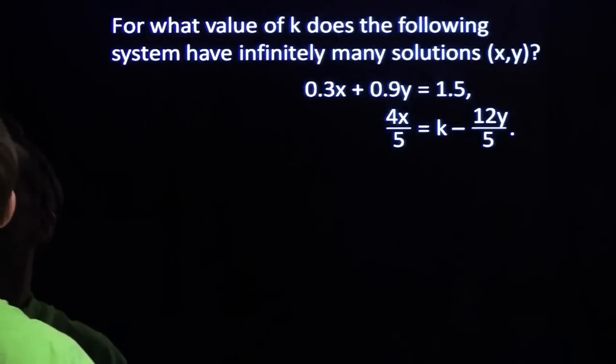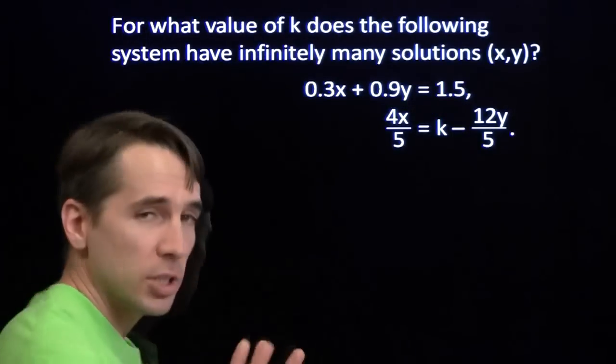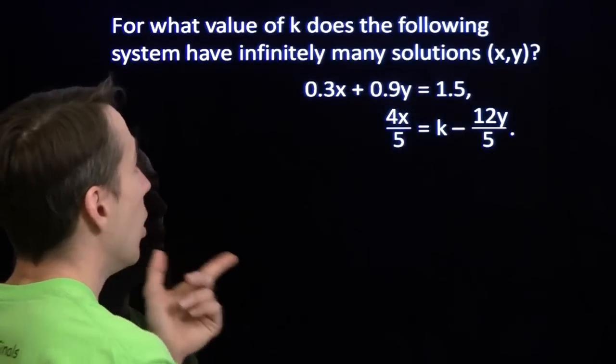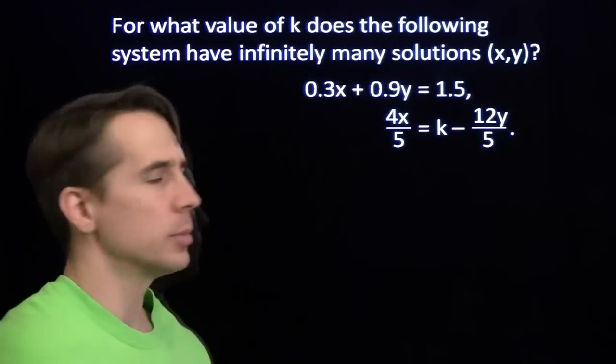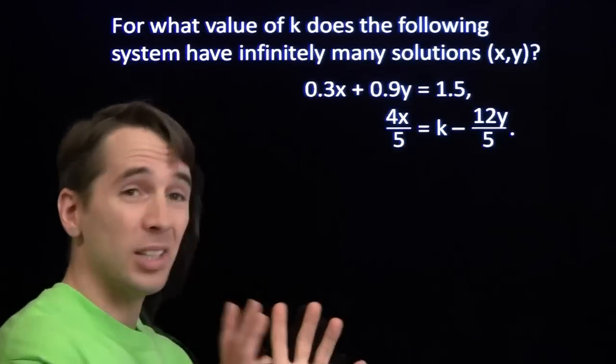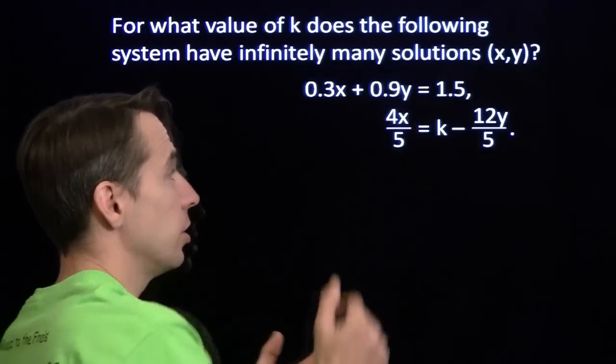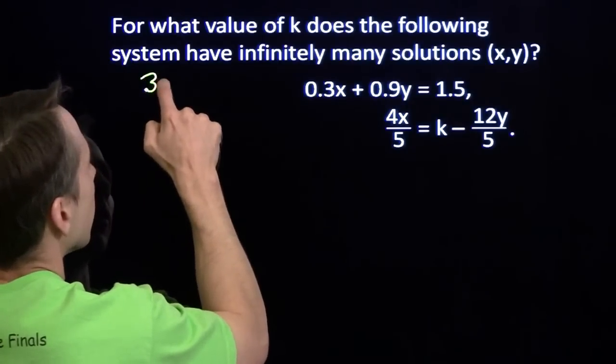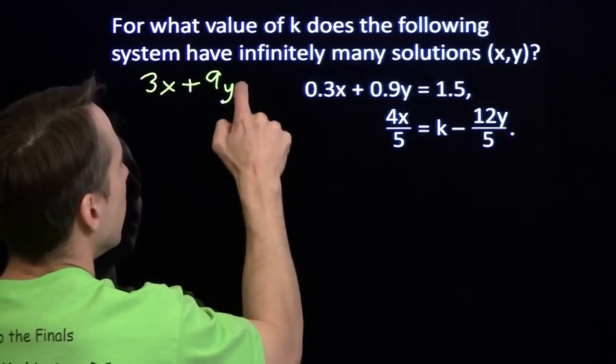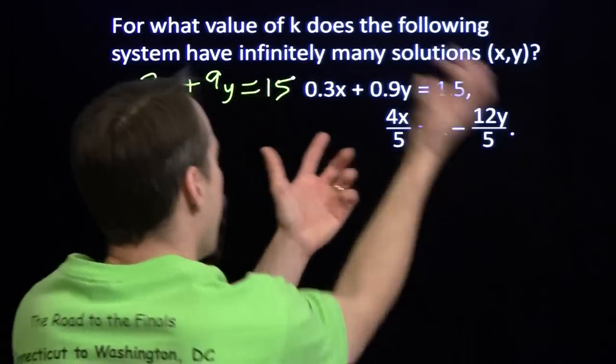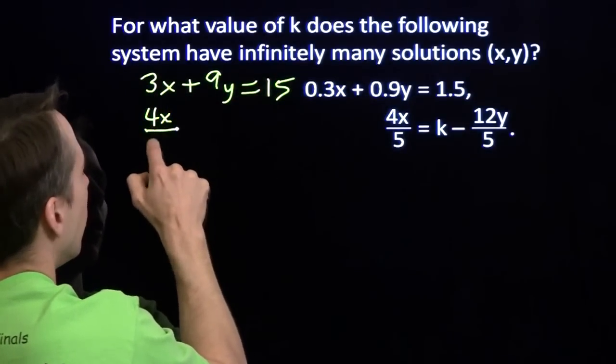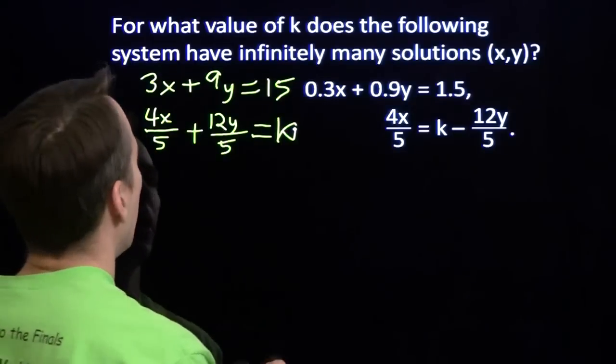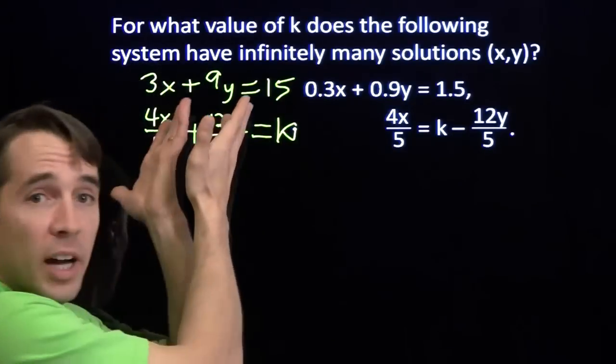Let's take a look at one more problem here. We just saw that linear equations, systems of linear equations, can have infinitely many solutions. We've got a system here. We've got to figure out what value of k will make one of those systems. Well first, this just looks confusing. Let's organize our equations. We'll get rid of the decimals in the first one. I'm going to multiply both sides of this by 10, and that will give us 3x plus 9y equals 15. And this one, I'm going to bring the x and the y over here. 4x over 5 plus 12y over 5 equals k.